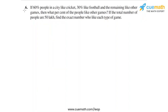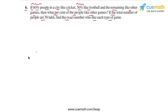Here's what the problem statement in question 6 of this exercise says: if 60% of people in a city like cricket, 30% like football, and the remaining like other games, then what percent of people like other games? And if the total number of people are 50 lakh, find the exact number who like each type of game.